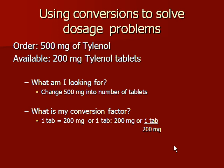Now let's solve an actual drug calculation problem. The doctor orders 500 milligrams of Tylenol. You have on hand 200 milligram tablets. What calculation needs to be performed in order to give the desired amount of medication? We need to change 500 milligrams into a specific number of tablets. In order to do this, we need a conversion factor between milligrams and tablets. According to the problem, we know that each tablet contains 200 milligrams. This relationship is our conversion factor.